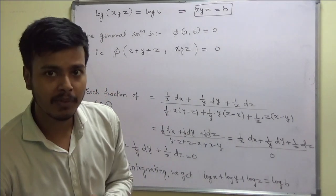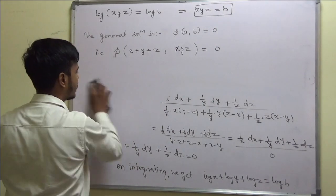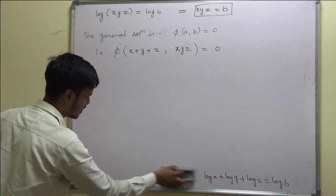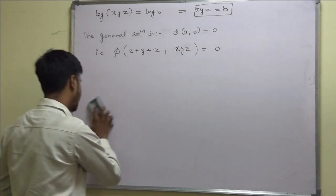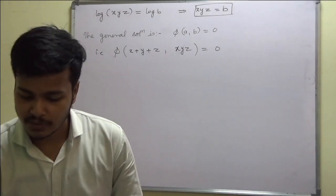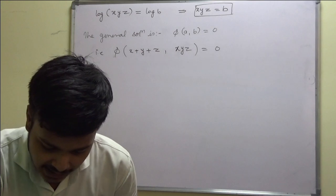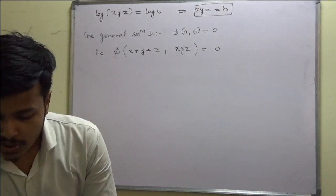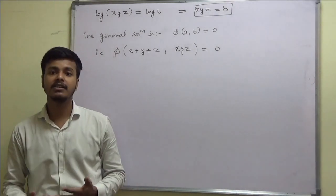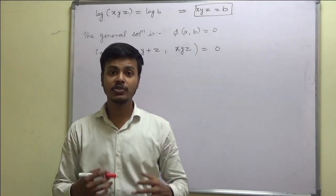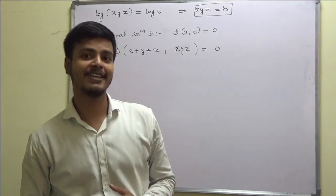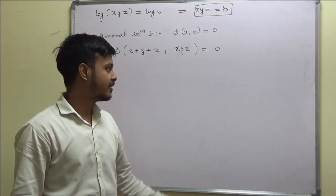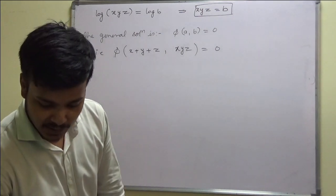Now let me take one more problem. It all depends on the choice of non-zero multipliers. If you take the multipliers correctly, you will get the solution very nicely. It all depends on you to find the multipliers — the more you practice, the more you will get an idea of what to take. You need some brain exercise to think about the multipliers, but once you get it, you are through with this topic.